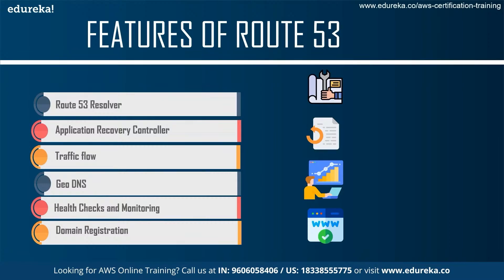The second feature is the Application Recovery Controller, which ensures availability zones or regions are continuously audited for recovery readiness. The third feature is Traffic Flow — an easy-to-use, cost-effective global traffic management system used to route end users to the best endpoint of the application based on geo proximity, latency, health, and other factors.